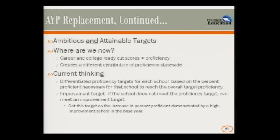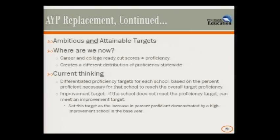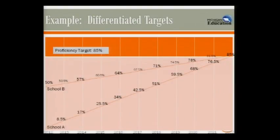For example, with a school at 0% proficient in mathematics, if the overall target is set at 85%, that school would be asked to get to 8.5% in the next year — with a 10-year trajectory. Almost no schools have demonstrated that kind of improvement over time, making this quite ambitious. A school at 50% proficient would need to reach 85% by 2022, with their trajectory going up at a slower rate.